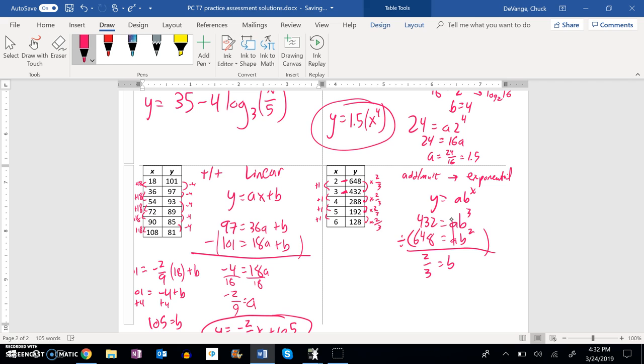And I'll just plug this into here. 432 equals a times two-thirds to the third. Okay, so 2 to the third power.